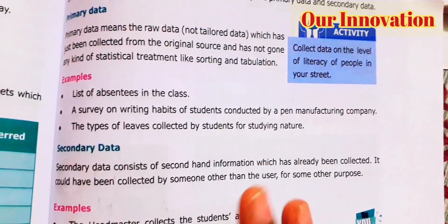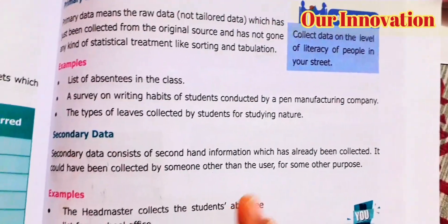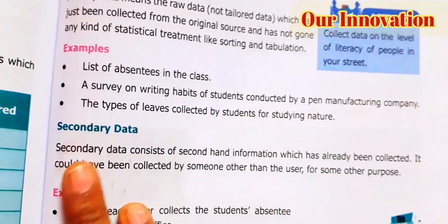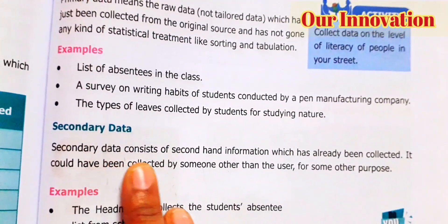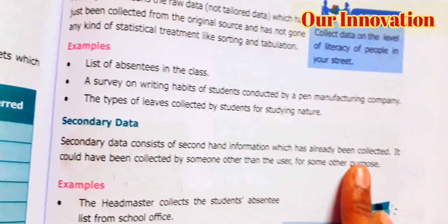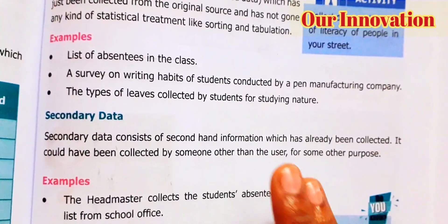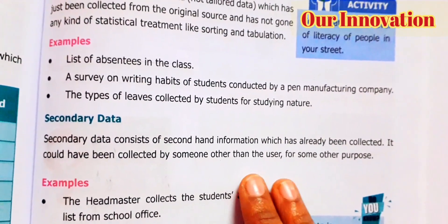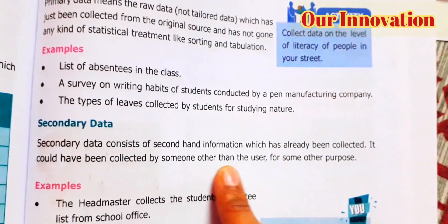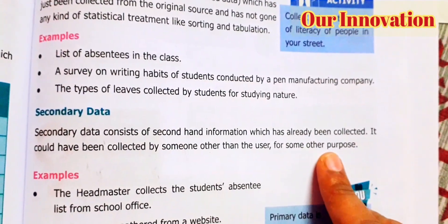Secondary data means data that has already been collected, which you re-collect or recheck. That is called secondary data. Secondary data consists of second-hand information which has already been collected. It could have been collected by someone other than the user for some other purpose.